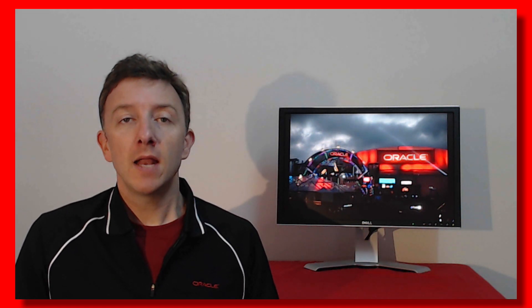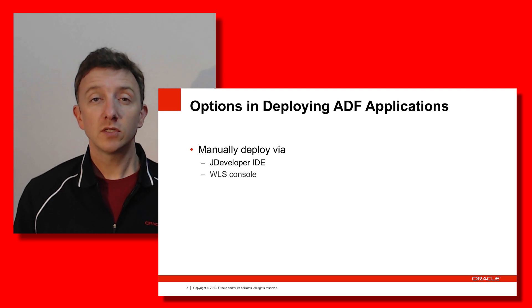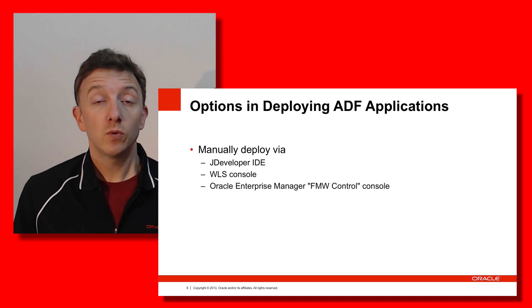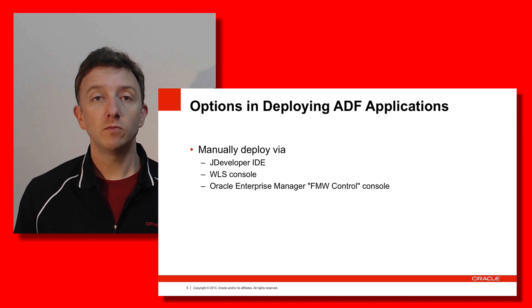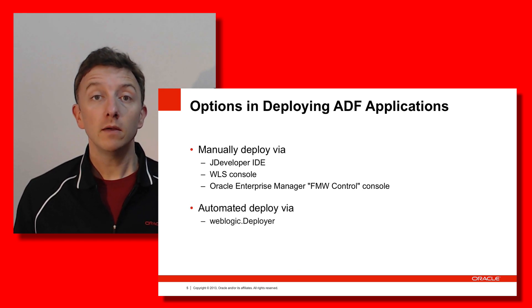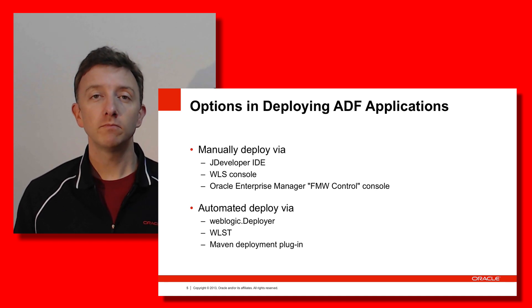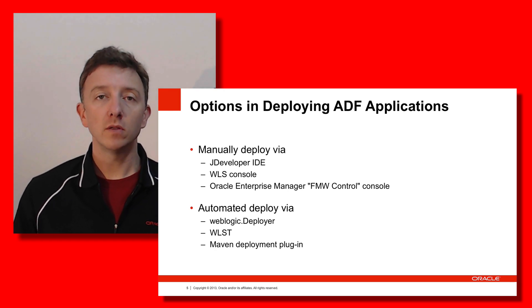In terms of the options available to deploy to a WebLogic server, they divide into two categories: the manual set of options, and the automatic set of options that you would script and call from a continuous integration server. The manual options include the JDeveloper IDE, the WebLogic Server console itself, and the Fusion Middleware Control console, which is part of Oracle Enterprise Manager. The automatic scriptable methods include weblogic.deployer, WLST scripts, and in the 12c release, the Maven deployment plugins.